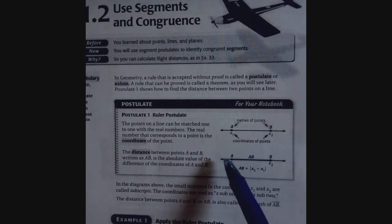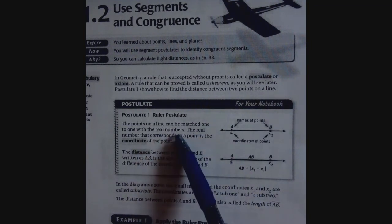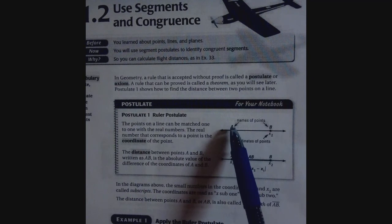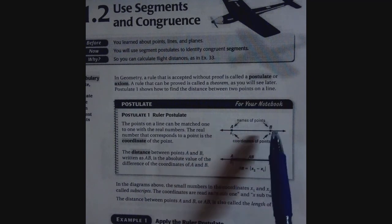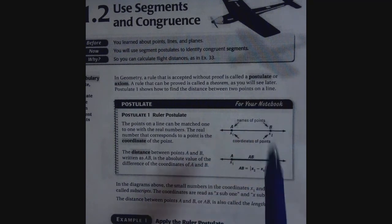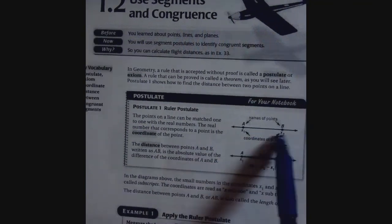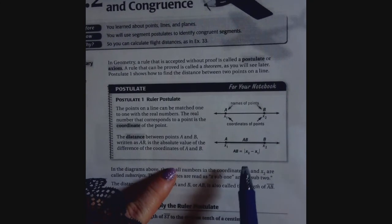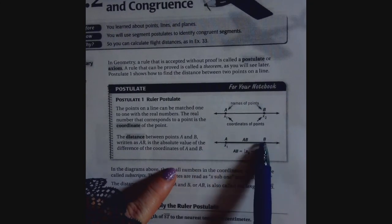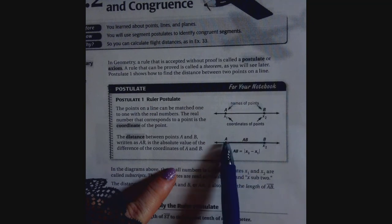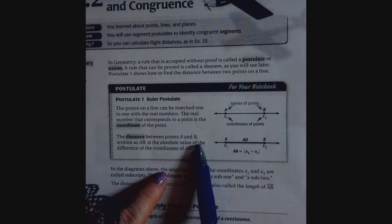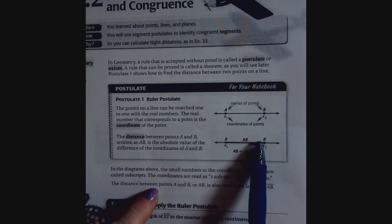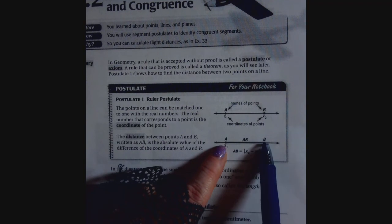The points on a line can be matched one-to-one with real numbers. So here, point x₁ they called it A, point x₂ they called B. So the name of the points and the coordinates of the points. So here we go on. The distance between A and B, written AB, is the absolute value of the difference of the coordinates A and B.